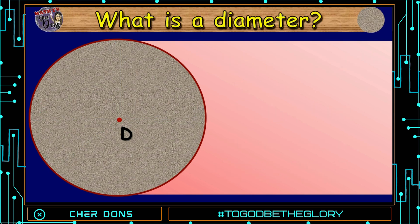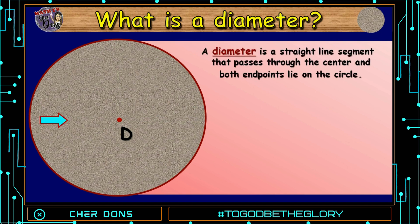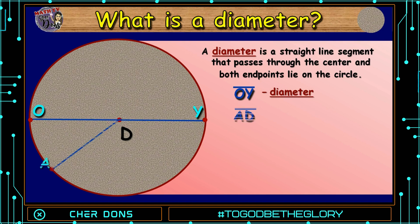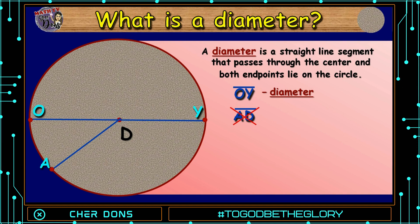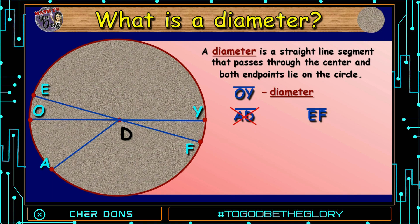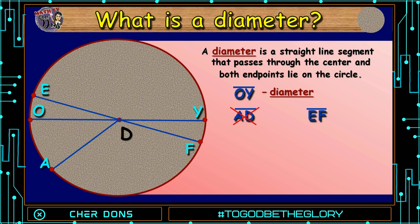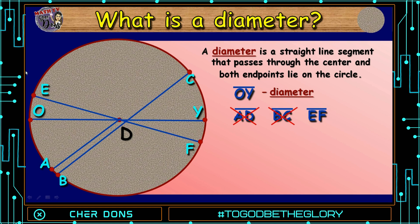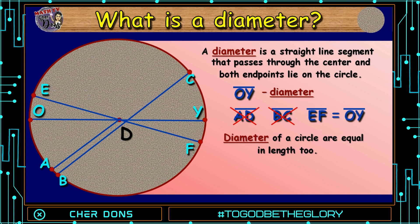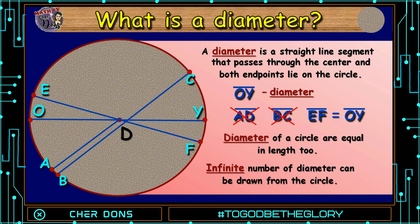Next, what is a diameter? A diameter is a straight line segment that passes through the center and both endpoints lie on the circle. Line segment OY is a diameter. Is line segment AB a diameter? No, it is not — because it's a radius. How about line segment EF? Yes, it's a diameter: a straight line segment that passes through the center and the endpoints lie on the circle. How about line segment BC? It is not a diameter. Although it forms a straight line, it didn't pass through the center. Diameters of a circle are equal in length, so line segment EF equals line segment OY. An infinite number of diameters can be drawn from the circle.